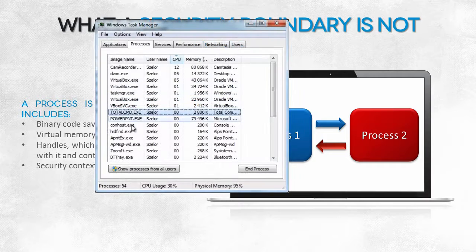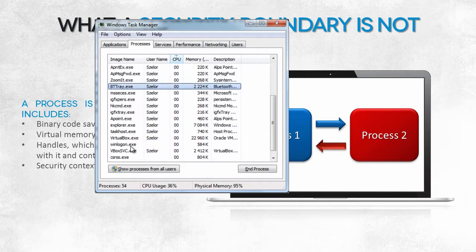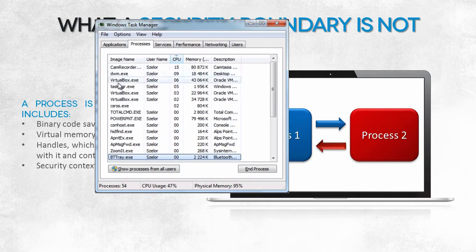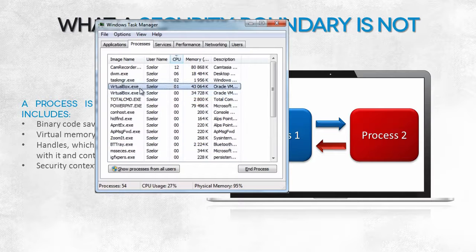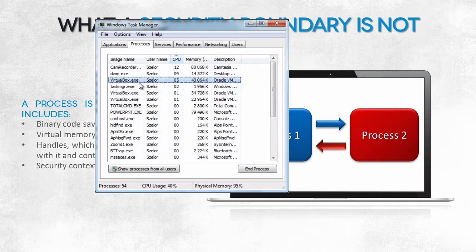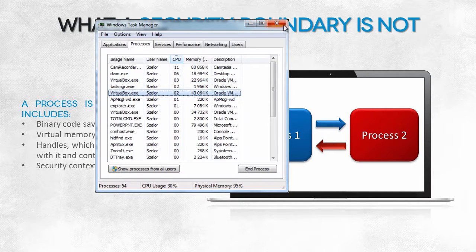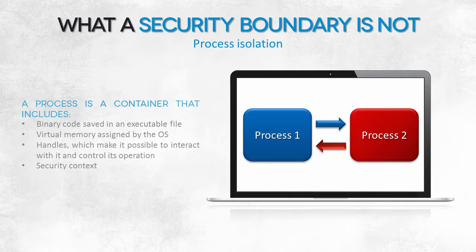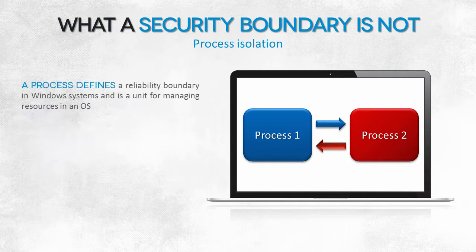Returning to the task manager, the processes tab shows elements that are not actual processes. What's more, some launched binary objects are contained here multiple times. Modern operating systems, including Windows, don't use a process to set a security boundary. A process defines a reliability boundary and is managed by an operating system.